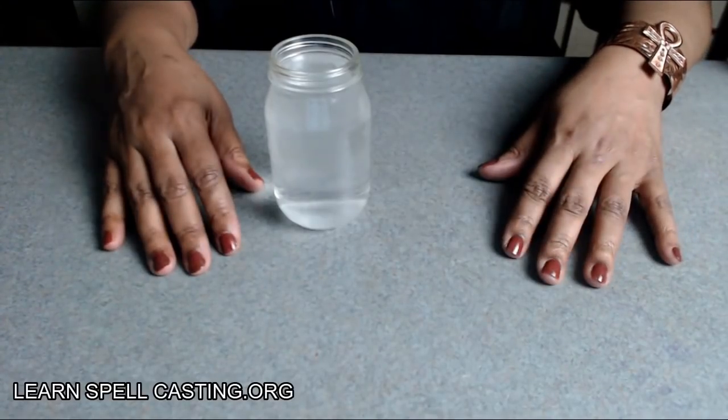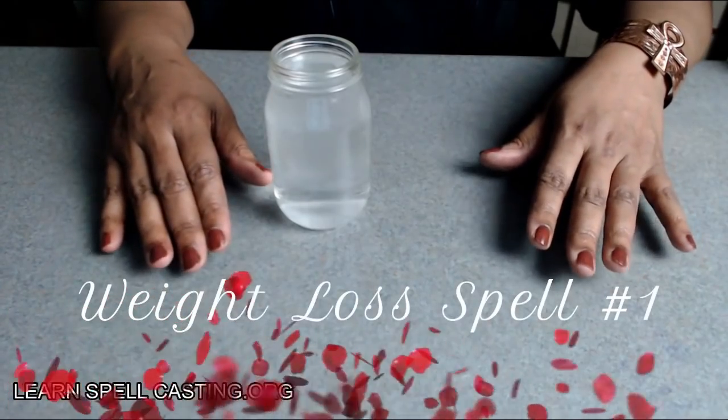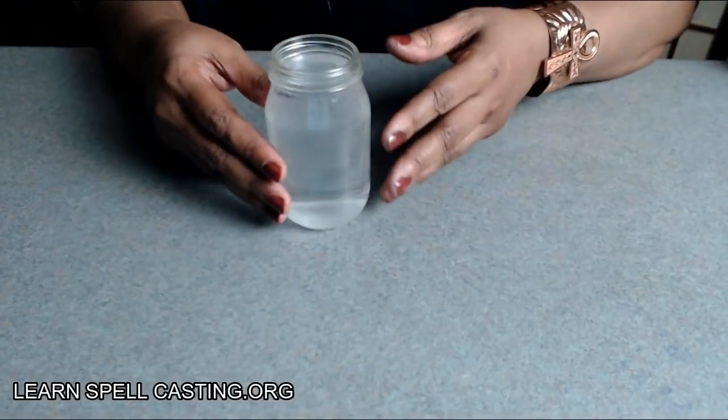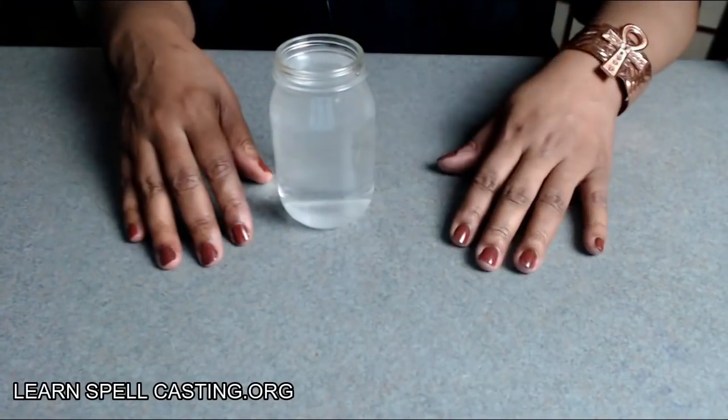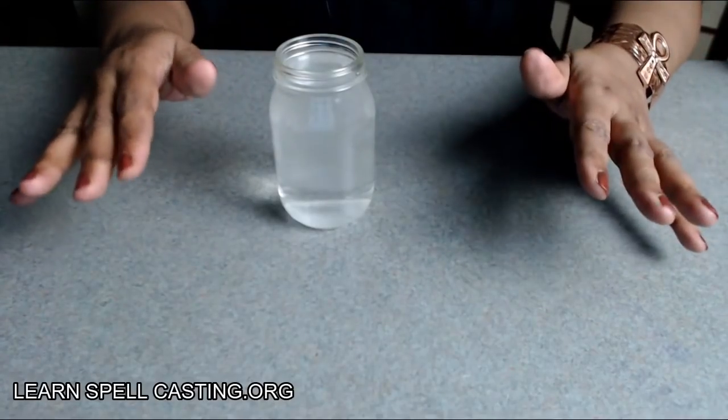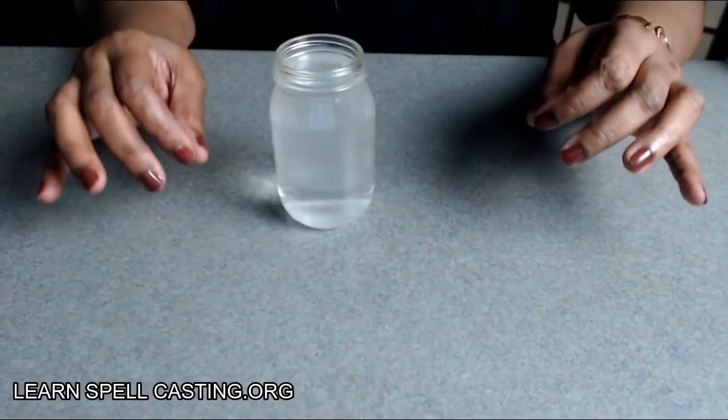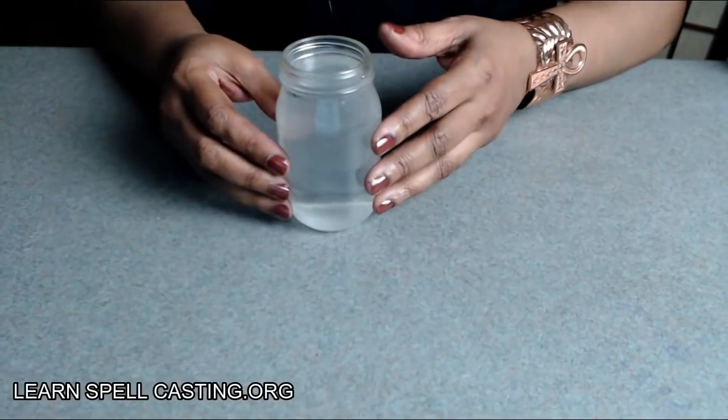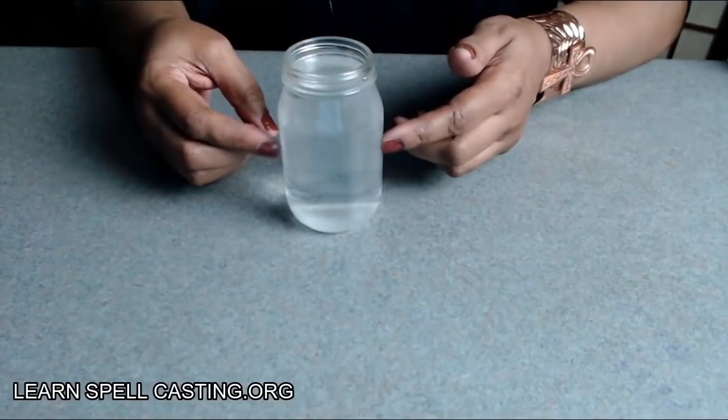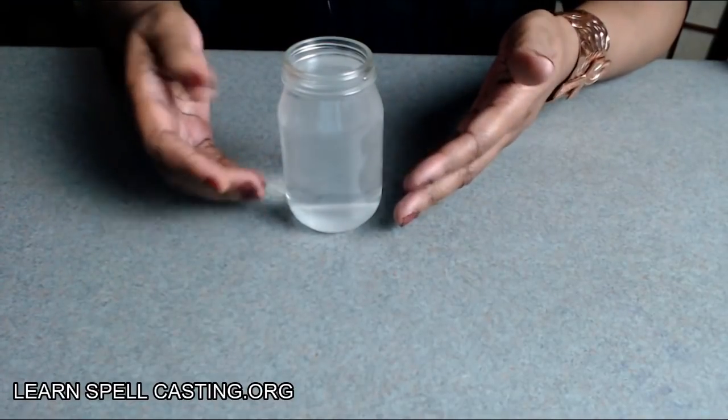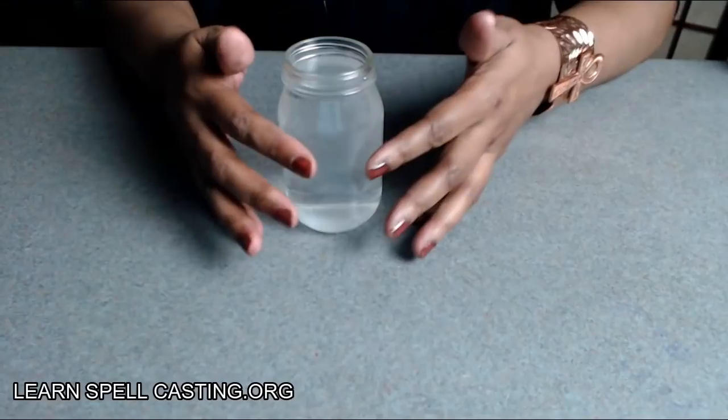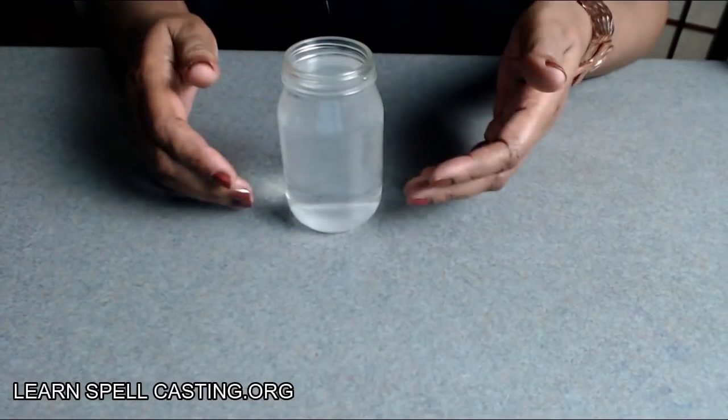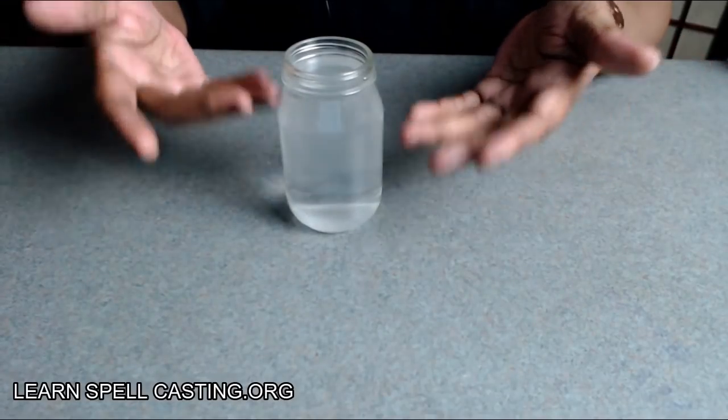Let's get started. The very first weight loss spell only requires water inside of a jar, glass, wine goblet, whatever you have handy that you do not mind not using for a very long time. This is actually a mayonnaise jar that I scrubbed off the label and took off the cap and just cleaned it from the inside and placed water in it from the tap.